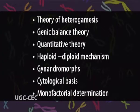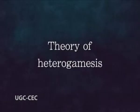The chromosomal theory of sex determination is subdivided into different divisions: theory of heterogamesis, genic balance theory, quantitative theory, haploid-diploid mechanism, gynandomorphs, cytological basis, and monofactorial determination. Firstly, the theory of heterogamesis, which was proposed by Correns in 1906.